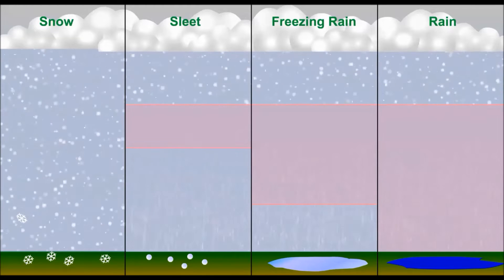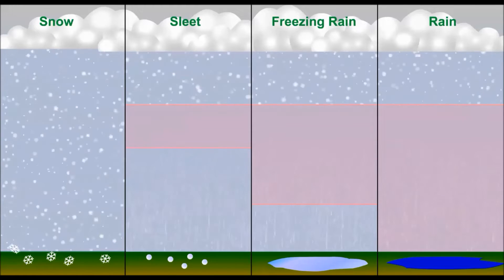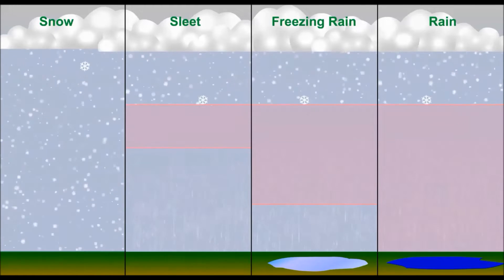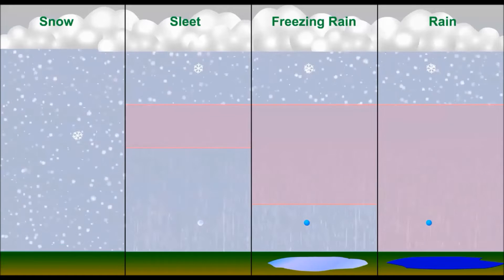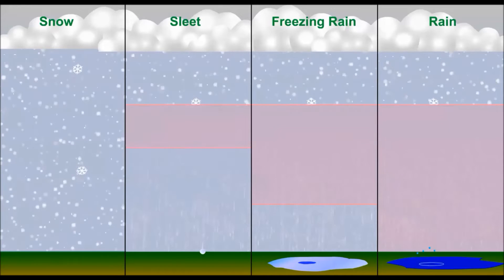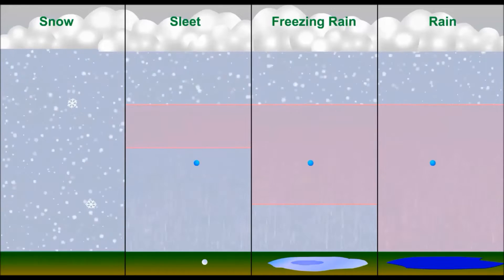The precipitation that usually occurs in our country, the Philippines, includes rain, drizzles, and hailstone.